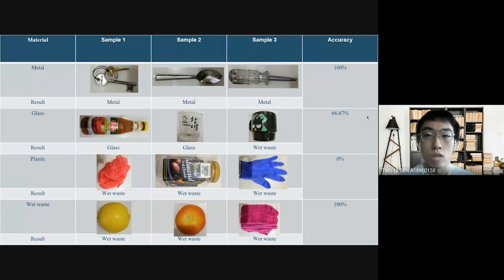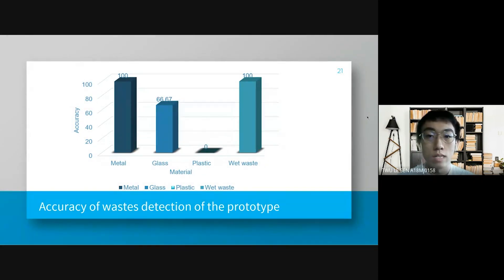The last one we are using the soil moisture sensor to detect wet waste. And this is same like metal, very accurate. So like we can see we here we got lemon, tomato and white cloth. The accuracy also same like 100%, is very accurate. And then we can see our graph. This is our graph. We can see the metal, glass, plastic and wet waste. So the metal and the wet waste is 100% to detect. And the glass is around 67% and the plastic unfortunately is zero percent.